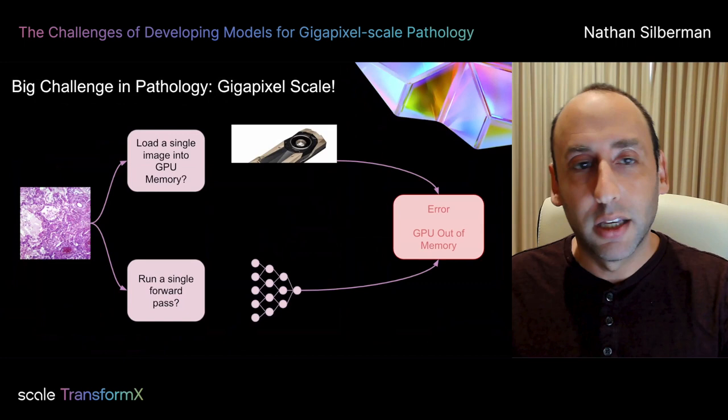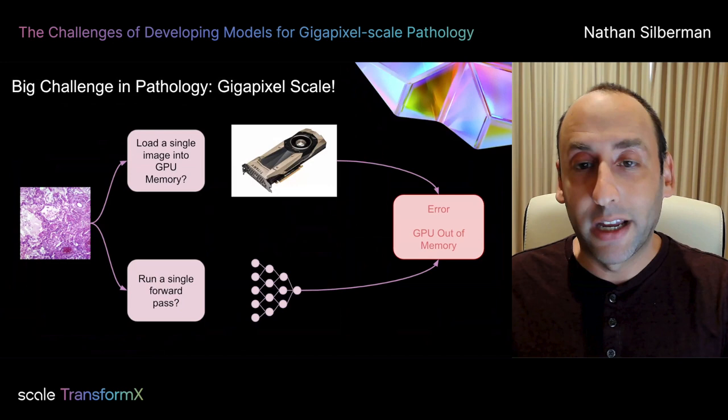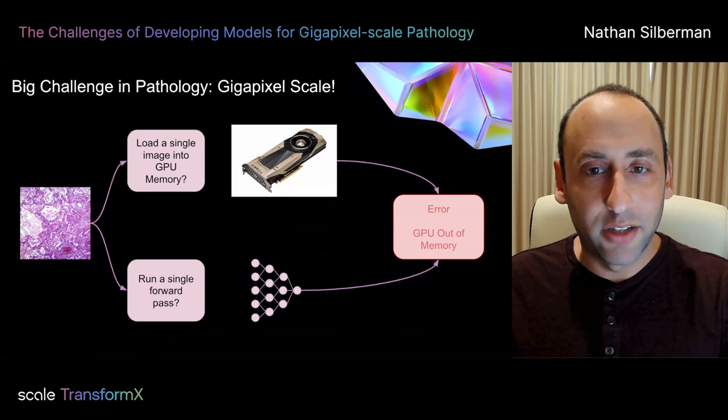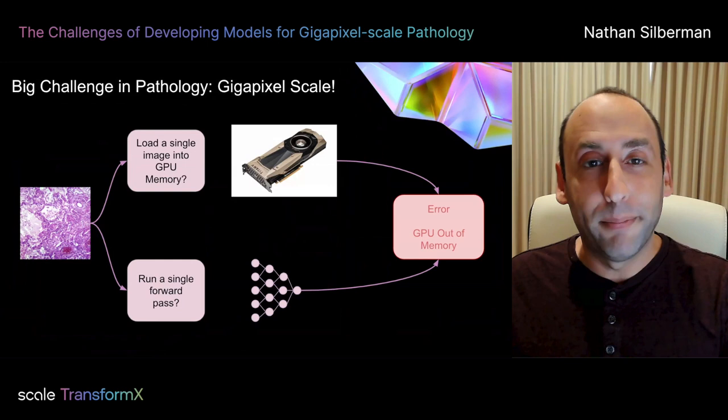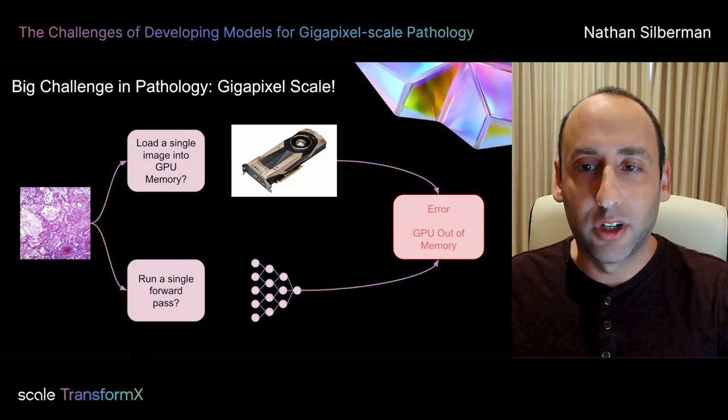In practice, this means that you can't even load pathology images onto your GPU without running out of memory. Many pathology slides are 30 gigabytes alone, which exceeds the memory capacity of the vast majority of GPUs. And even if you could manage to get a pathology image onto a GPU somehow, state-of-the-art neural networks require the creation of multiple layers of feature maps, which themselves also won't fit into GPU memory.